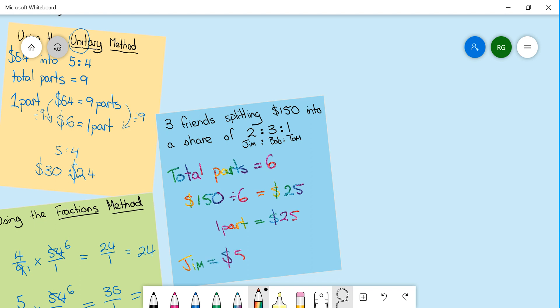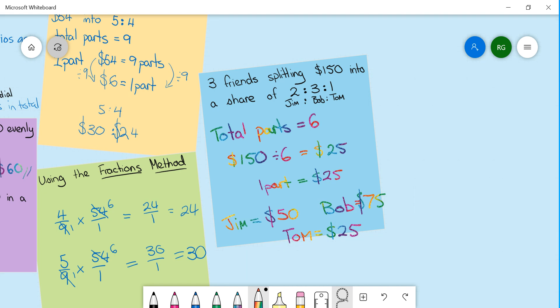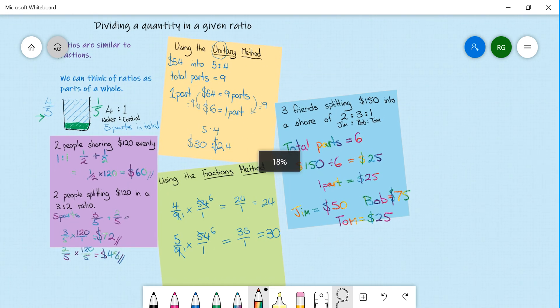Therefore Jim will receive fifty dollars, Bob will receive seventy-five, and Tom will get just twenty-five dollars. This can always be checked by ensuring that they all add up to the same amount or they add up to the total.